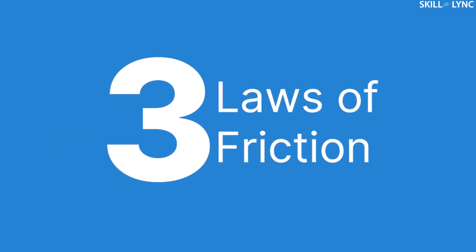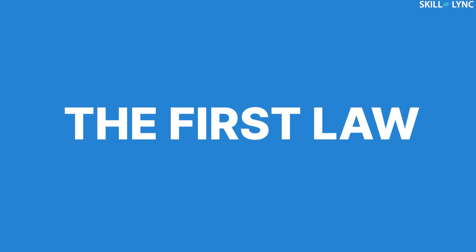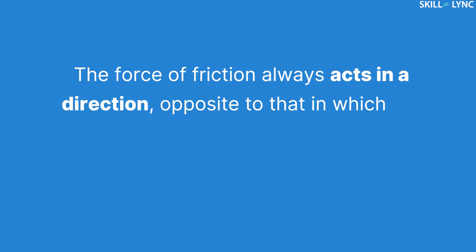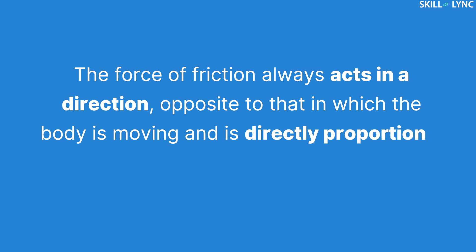We will explain all three of these laws with the help of illustrations. The first law states that the force of friction always acts in a direction opposite to that in which the body is moving, and is directly proportional to the applied load.